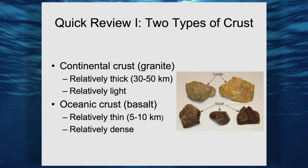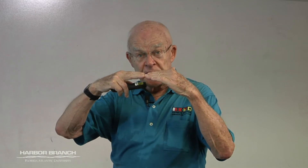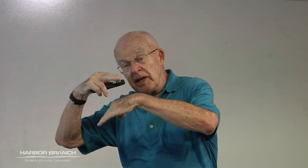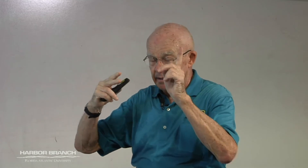There are two types of crust. There is continental crust, commonly granite. The continental crust is relatively thick and, more importantly for our purposes, relatively light — relatively low density. Oceanic crust is the other type; in contrast, it is relatively thin and relatively dense. There are parts of the world where these two crusts come together, and the more dense crust — the oceanic crust — because it's heavier, burrows down under the continental crust. That's the first step in the process that produces an earthquake.